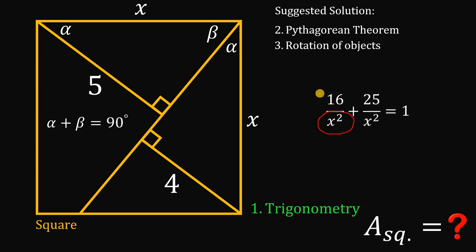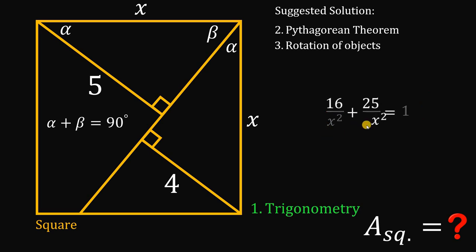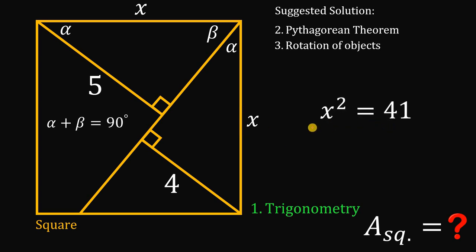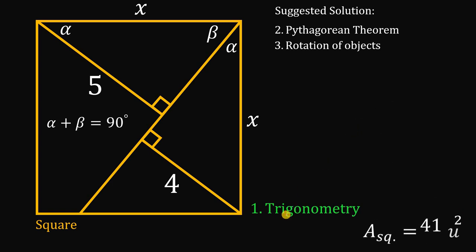To clear the denominator x squared, let's multiply all terms by x squared. We get 16 plus 25 equals x squared. So 16 plus 25 gives us 41. Take note that the side length of this square is x, therefore its area equals x squared, and we get x squared equals 41. Therefore, the area of this square must be equal to 41 square units. That is the answer using trigonometry.